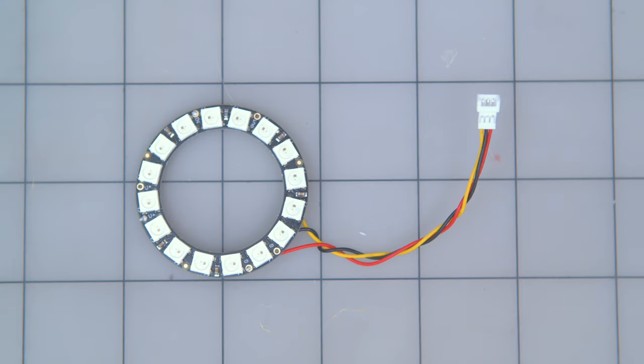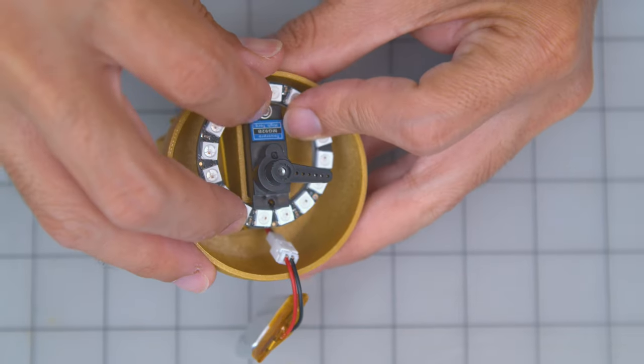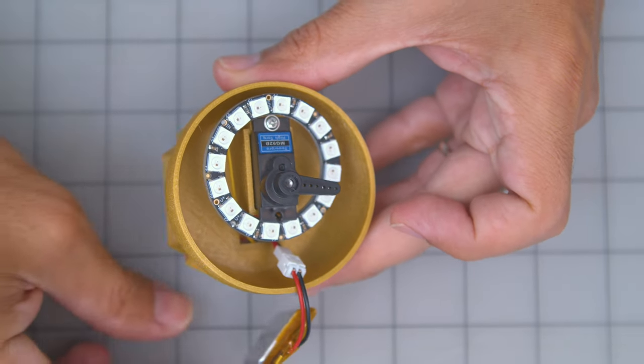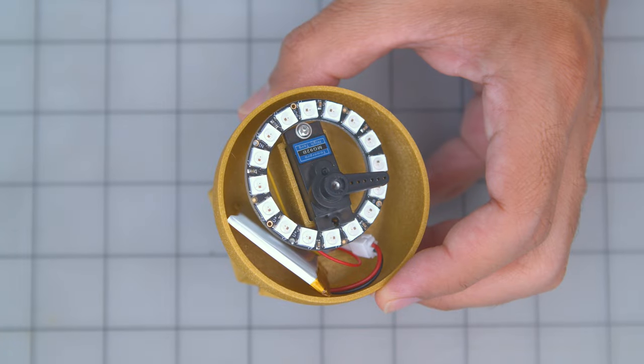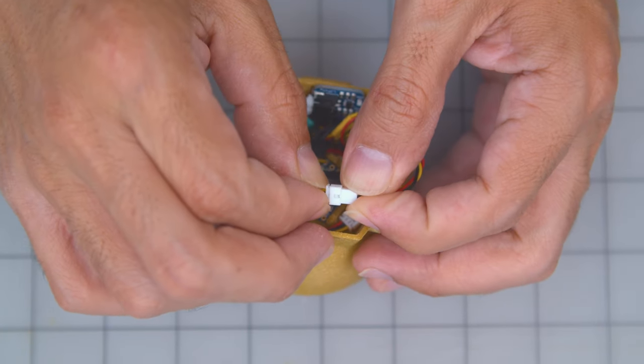The NeoPixel ring is wired up to another Molex cable. The PCB fits over the servo and press fits onto the center of the ring. The battery can then be nestled inside. The NeoPixel ring plugs into the itsy bitsy.